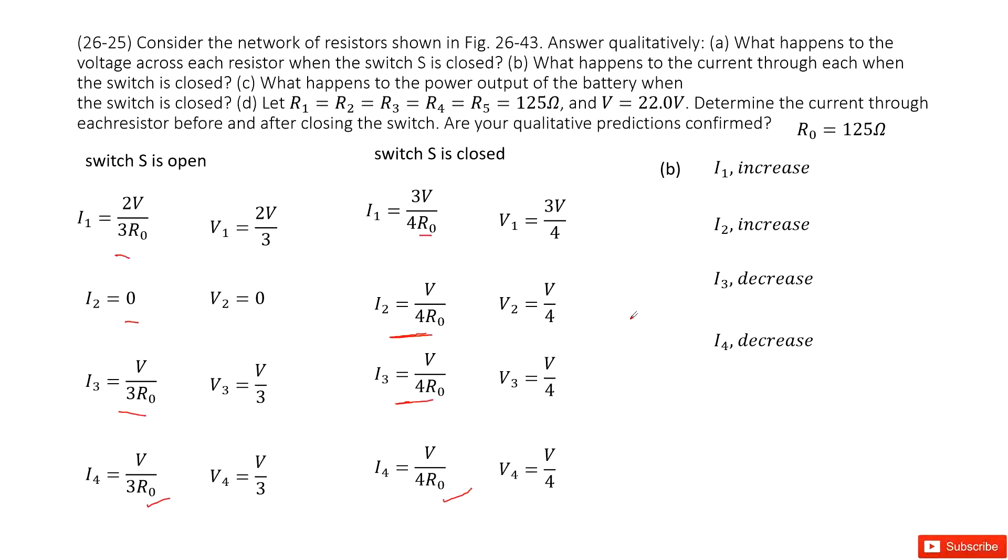Now we look at part C. It asks what happens to the power output of the batteries. The power for batteries is the current times V. In this case, V is constant and the current equals I. The current increased, so of course the power will increase.